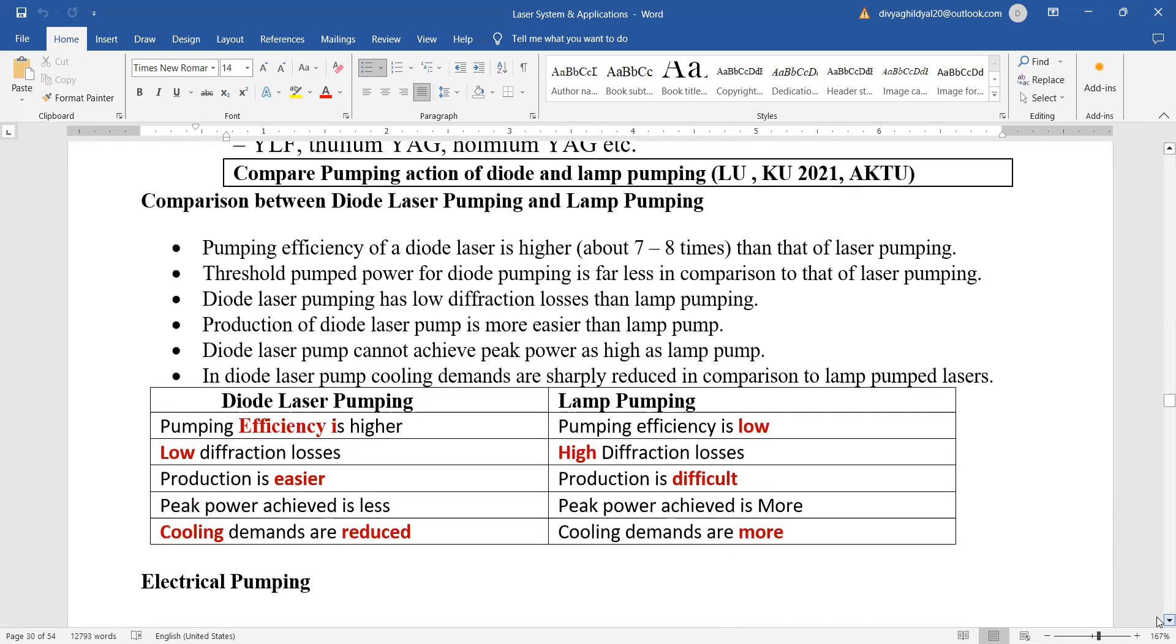This question has been asked many number of times where you have been asked to compare the pumping action of diode laser and the lamp pumping. So, diode laser pumping efficiency is high, lamp pumping efficiency is low, diode laser low diffraction losses, lamp pumping high diffraction losses, diode laser production is easier, lamp pumping production is very difficult, peak power achieved in diode laser is less but in lamp pumping it is high, cooling demands are reduced in diode laser whereas they are very high in lamp pumping lasers. Next lecture we will continue with the electrical pumping.